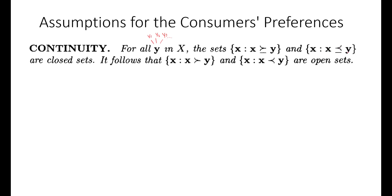Similarly, the set where x is at most as preferable as y also has two components: the preferences for x can be equal to the preferences for y, or the preferences for x can be less than the preferences for y. It again contains boundary points where preferences for x and y are the same, and also bundles where y is strictly preferred to x. Both of these are closed sets because both contain the equality condition.